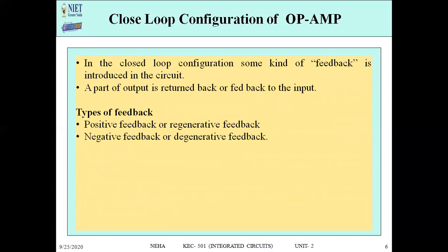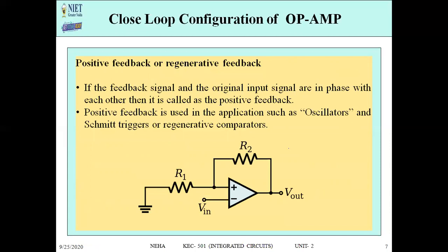In closed loop configuration, we introduce feedback in the circuit — meaning the output has a connection back to the input. Feedback can be of two types: positive feedback, also known as regenerative feedback, or negative feedback, which is known as degenerative feedback. Let us examine both types one by one.